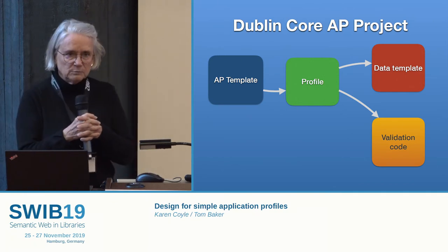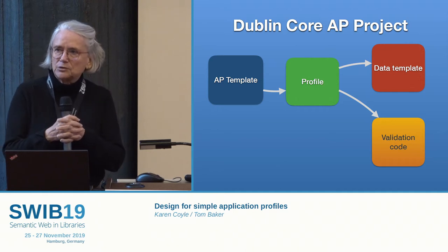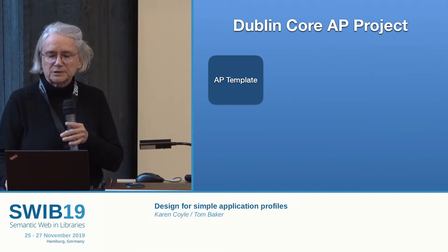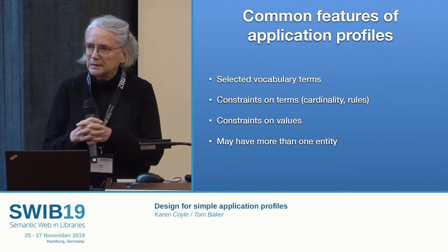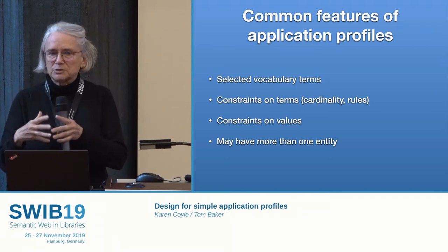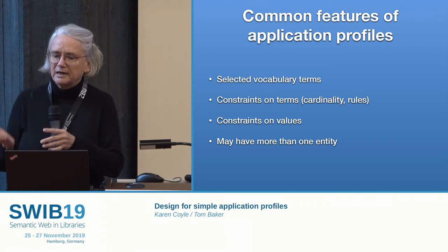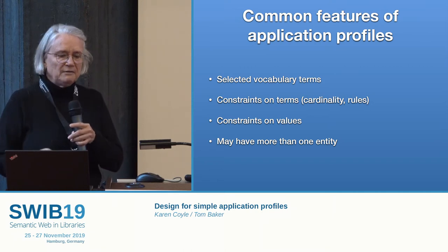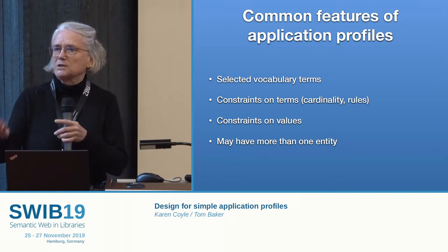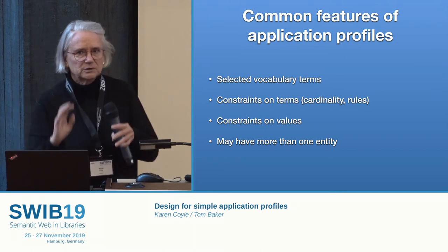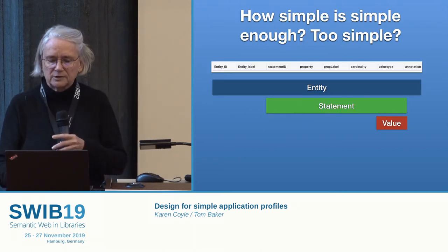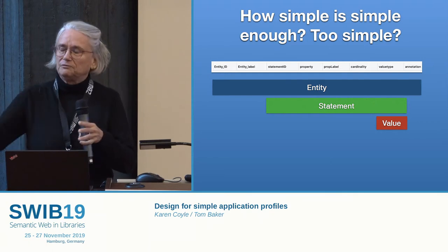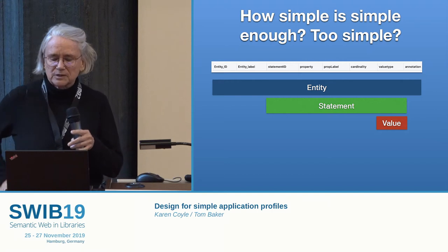So these are the elements that we're looking at: a template that can be used to create a profile, that can be used to create whatever you need for data input, and then also validation. In terms of the template, we looked at a number of different application profiles. They tend to have the vocabulary terms, the constraints on those terms, some constraints on values. They may have more than one entity. They can have as little as just a list of vocabulary terms. So none of this is really totally mandatory — they can vary in their detail. We got together and created a very simple template, which could be either a CSV file or used in something like Microsoft Excel.